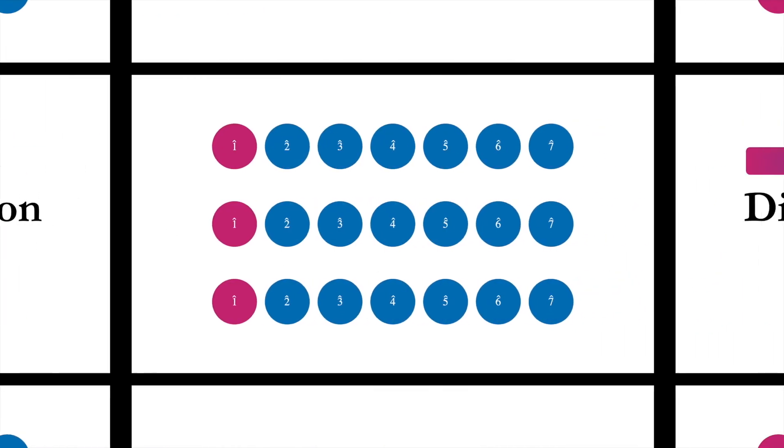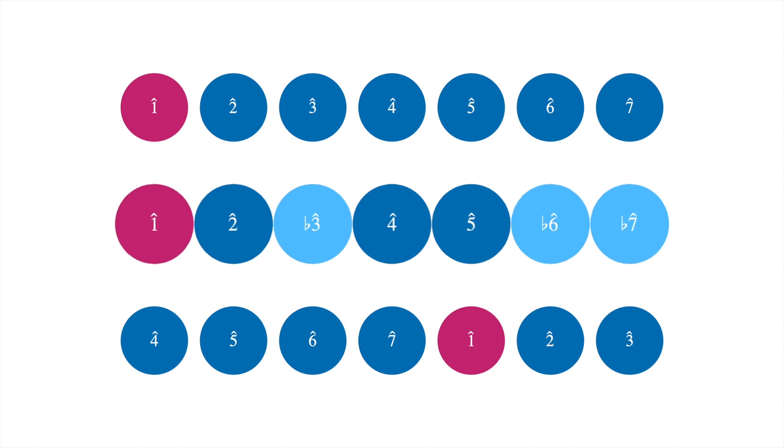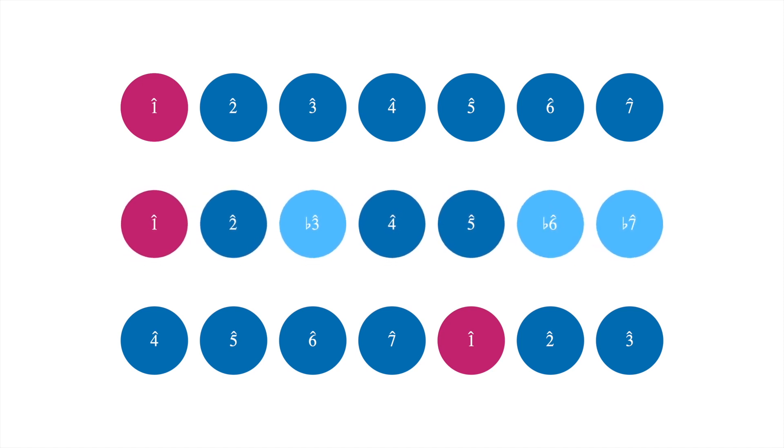Why? Modulation changes the scale and or the tonal center for a while. The change may be very short or last a long time, depending on the context. Its function is formal.